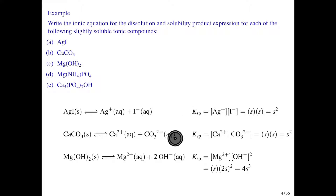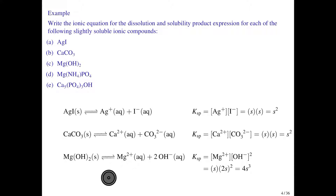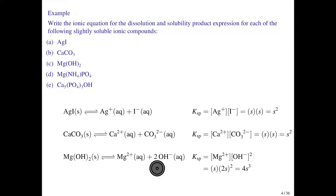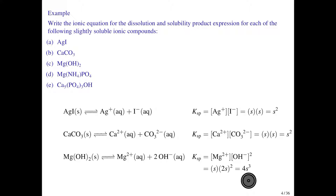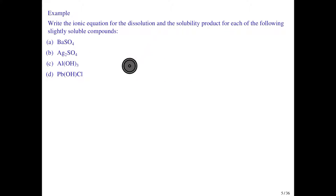Magnesium hydroxide is a bit more interesting because of the stoichiometric factor of two. When Mg(OH)₂ dissociates, you get magnesium ions and two hydroxide ions — a one-to-one ratio for magnesium and one-to-two for hydroxide. If s moles per liter dissolve, you get s moles per liter of Mg²⁺ and 2s moles per liter of OH⁻. Substituting those in: KSP = (s)(2s)² = 4s³. I'll leave the remaining examples as practice problems.